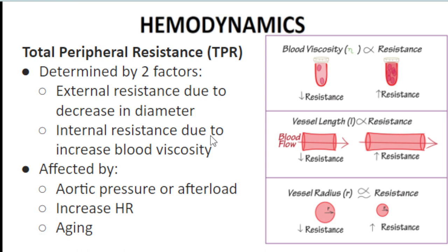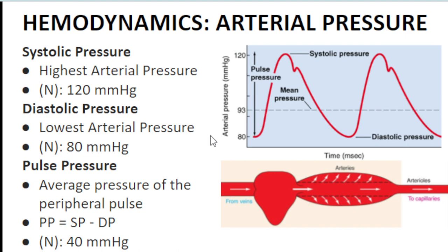Arterial pressure is the force exerted by blood against the vessel wall. The heart pumps blood into the arteries, and blood pushes against the vessel walls — this pushing capacity is arterial pressure, expressed in millimeters of mercury. There are several types: systolic pressure is the highest arterial pressure, normally 120 mmHg, occurring when the heart pumps blood into the vessels.